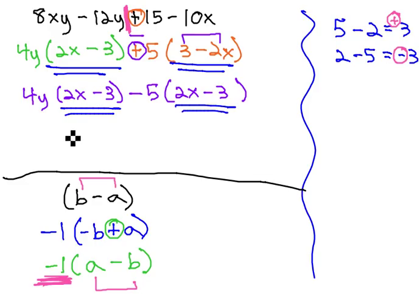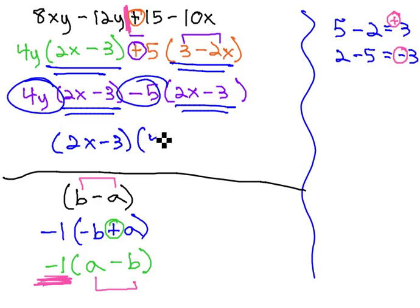Notice now, we do have the matching binomial of 2x, minus 3, and the other factor can be 4y, minus 5.